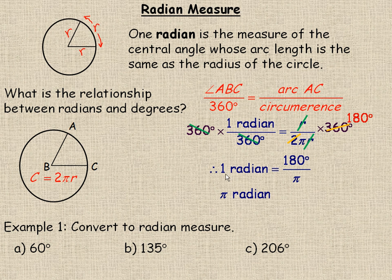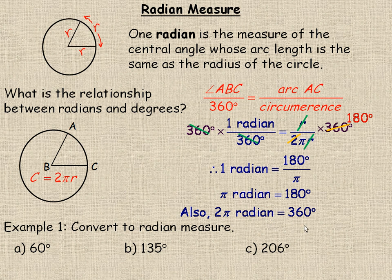If we multiply both sides by pi, then pi radians equals 180 degrees. Remember, 180 degrees is half a circle or half of a revolution, so that's exactly pi radians — 3.14 radians. If we multiply both sides by 2, we get the full circle relationship: 360 degrees, a full circle revolution, is exactly 2 pi radians.